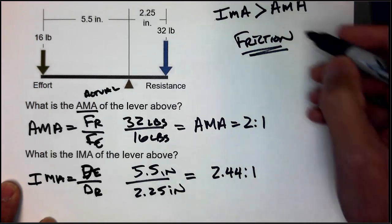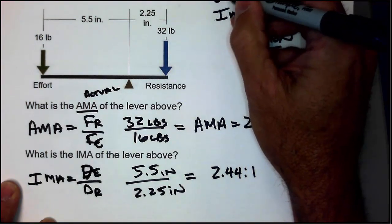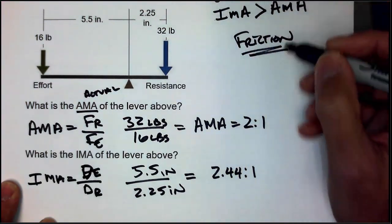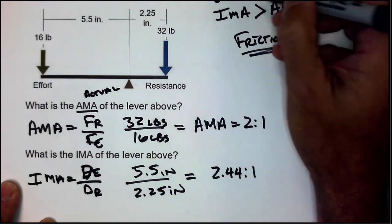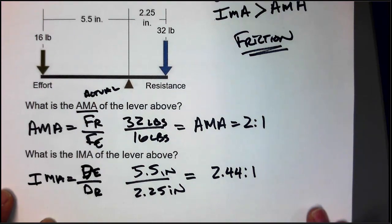So, as you can see, we have an IMA of 2.44 and an AMA of 2. This one's greater than that one, so we have the right answer.